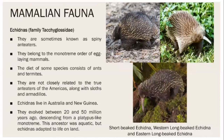The Echidna (family Tachyglossidae), also commonly called the spiny anteater, is also an egg-laying mammal. They feed on ants and termites and are not closely related to the true anteaters of America. Echidnas are present in Australia and New Guinea and evolved about 20 to 50 million years ago.